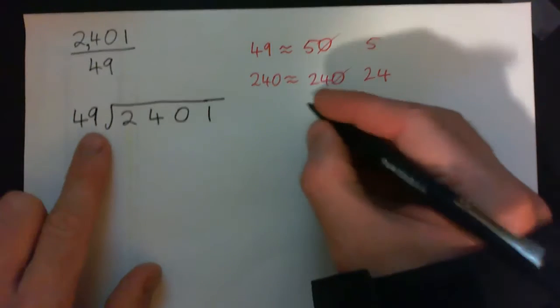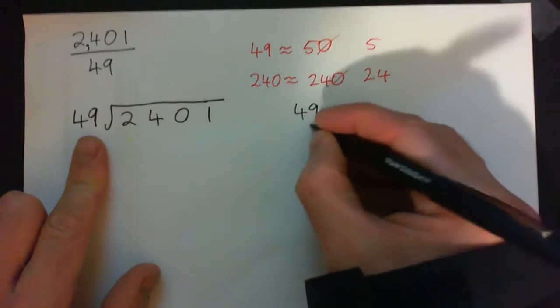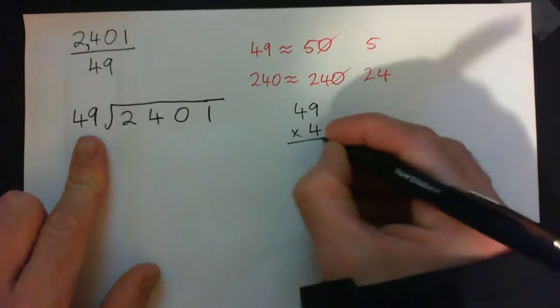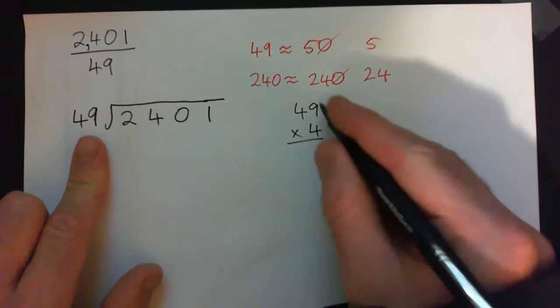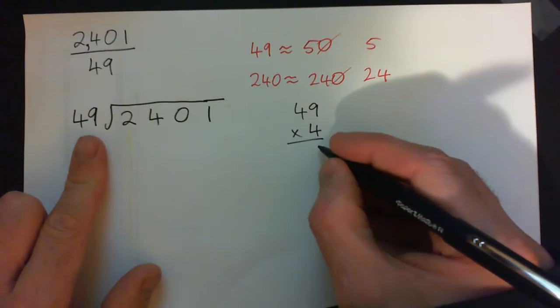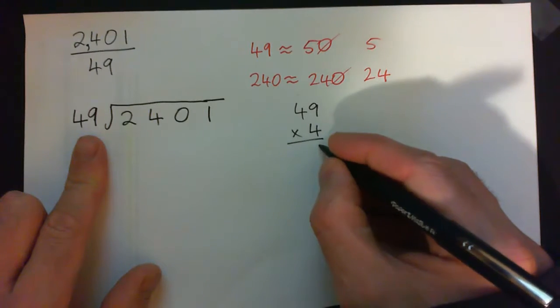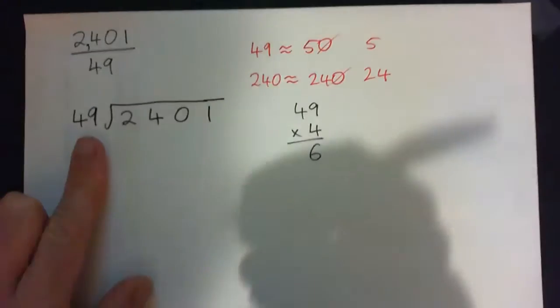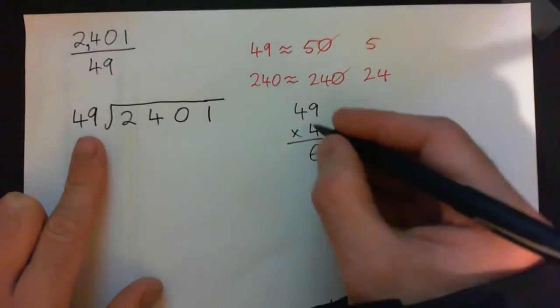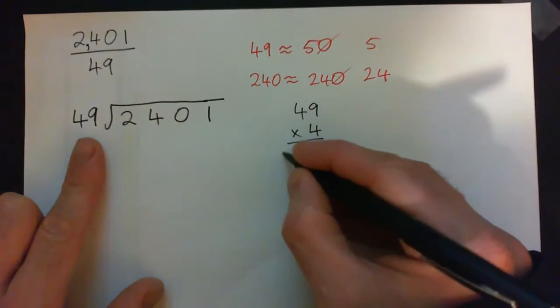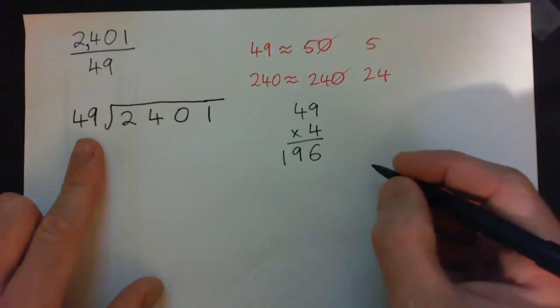I'm going to check that though. So I'm going to go 49 times 4, multiply it and see what happens. 4 times 9 is 36, carry the 3. 4 times 4 is 16 and 3 is 196.